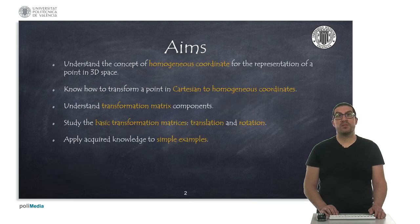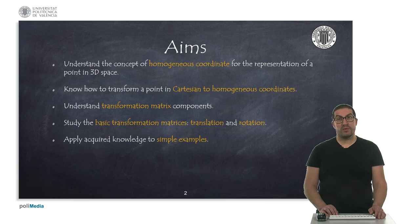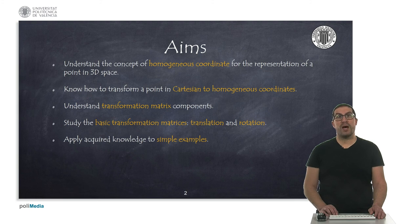The aims of this presentation are: to understand the concept of homogeneous coordinates for representing a point in 3D space; to see how to transform a point in Cartesian coordinates to homogeneous coordinates and vice versa; to introduce transformation matrices for performing geometric transformations using algebraic equations; to understand the elements of a homogeneous transformation matrix, focusing on basic translation and rotation operations and their composition; and finally, to work through simple numerical examples to consolidate the acquired knowledge.